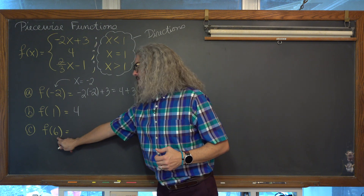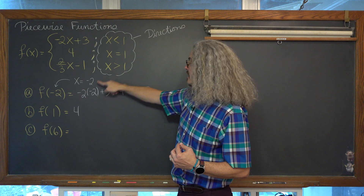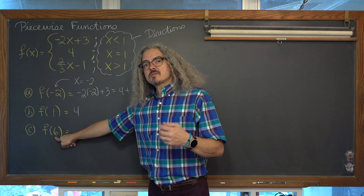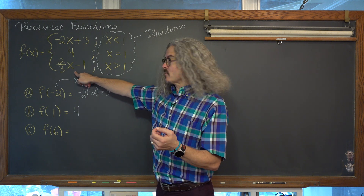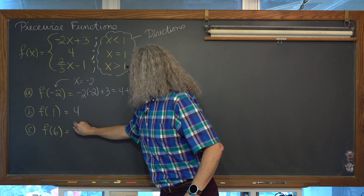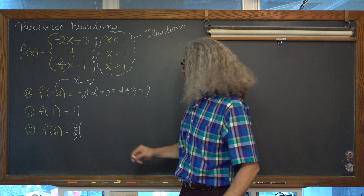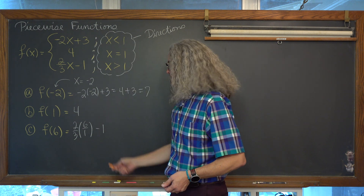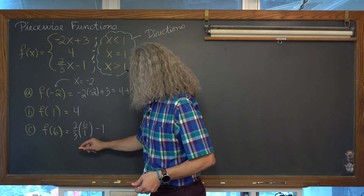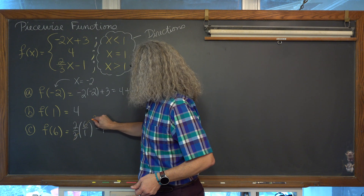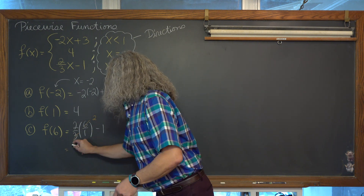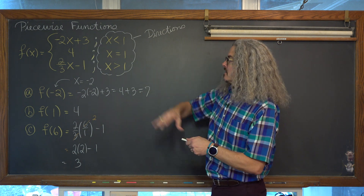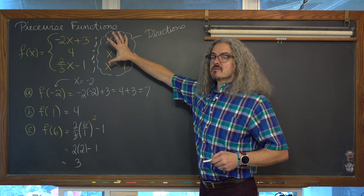For f of 6, the x value of 6 is not less than 1, is not equal to 1. The x value of 6 is greater than 1, so we're just plugging the number 6 into the third part of this piecewise function. That's 2 thirds times 6 over 1 minus 1. I always like to reduce fractions before multiplying to keep the numbers as small as possible. 6 divided by 3 equals 2, so we have 2 times 2 minus 1, which is equal to 3.